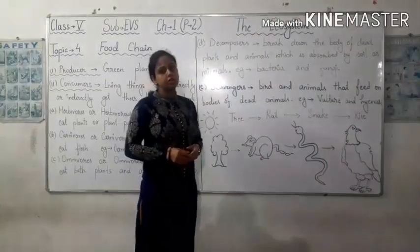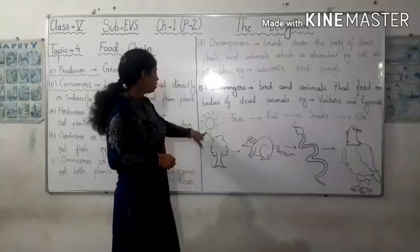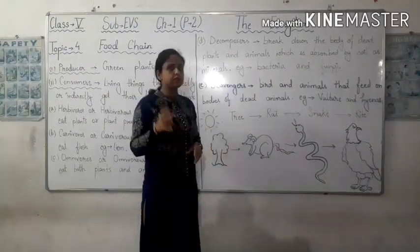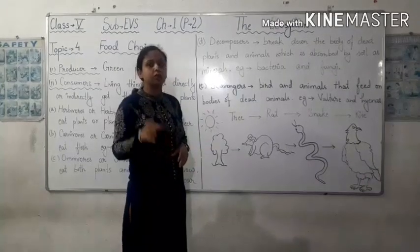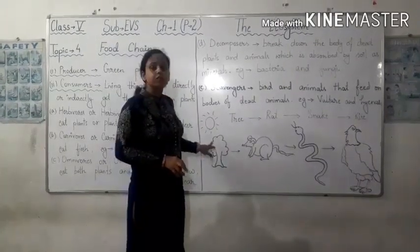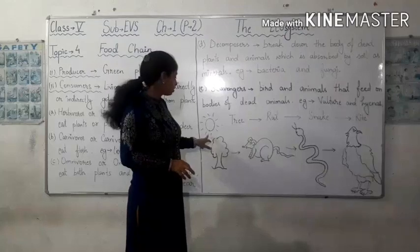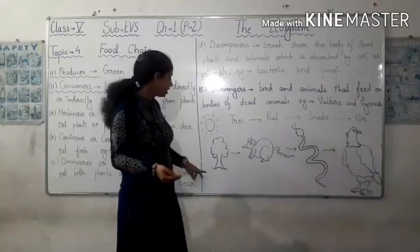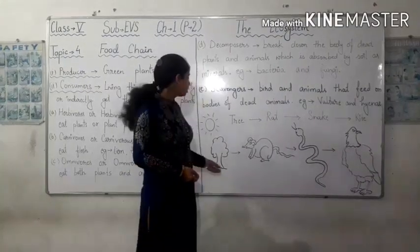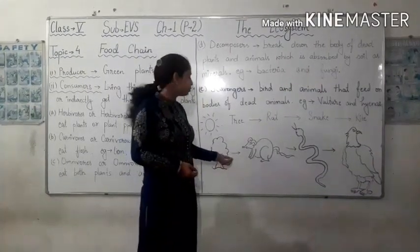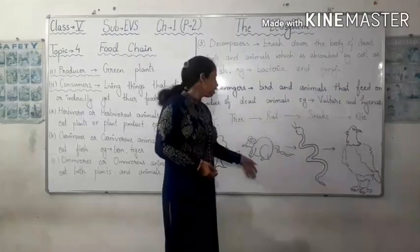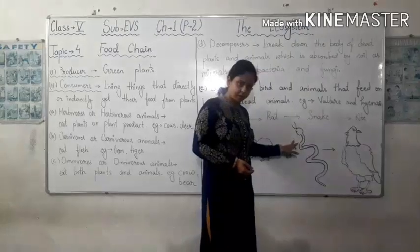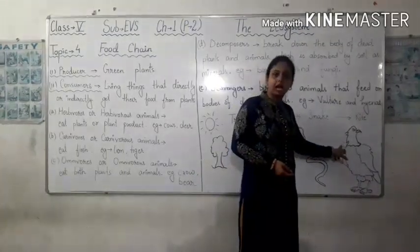Now, we will understand a food chain. Here you can see the sun. As we have already discussed, the sun is the source of all the energy on earth. With the help of the sun's energy, plants or trees produce their own food — they are the producers. The product of plants is eaten by a rat, and the rat is eaten by a snake. The snake is then eaten by a hawk.